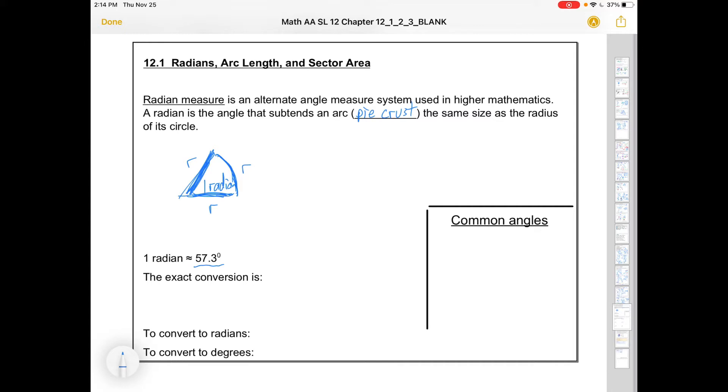The exact conversion is that pi radians equals 180 degrees. From here on out, if you see degrees you're in degree measure; if you don't see degrees we're in radian measure. To convert to radians you'll times by pi over 180, and to convert to degrees you'll times by 180 over pi.